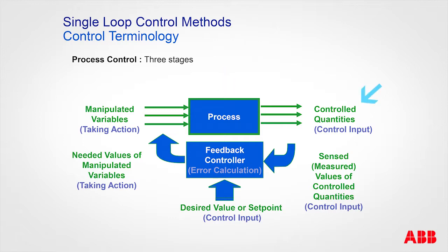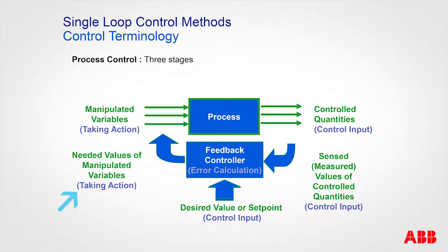You have a controlled quantity — what are you trying to control, and what attributes do you want the process to have? Your sensed variables are typically your controlled quantities fed into a feedback controller. Notice it is feedback — your measurement is fed back into the controller. The controller does the error calculation based on the set point (where you want to be) and the sensed variable (where you are).